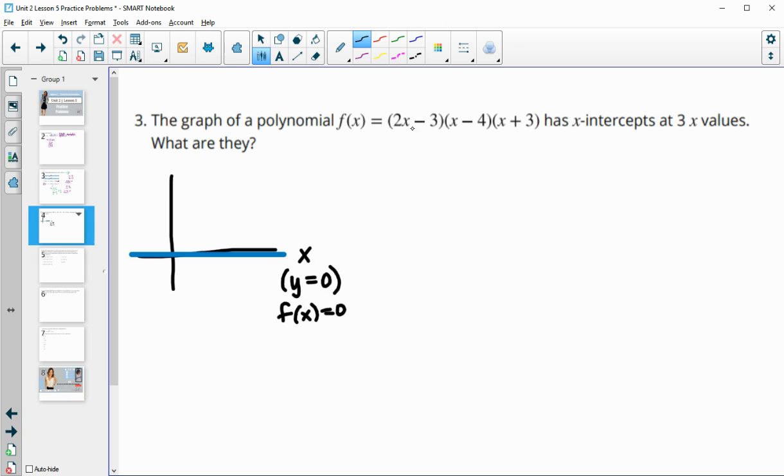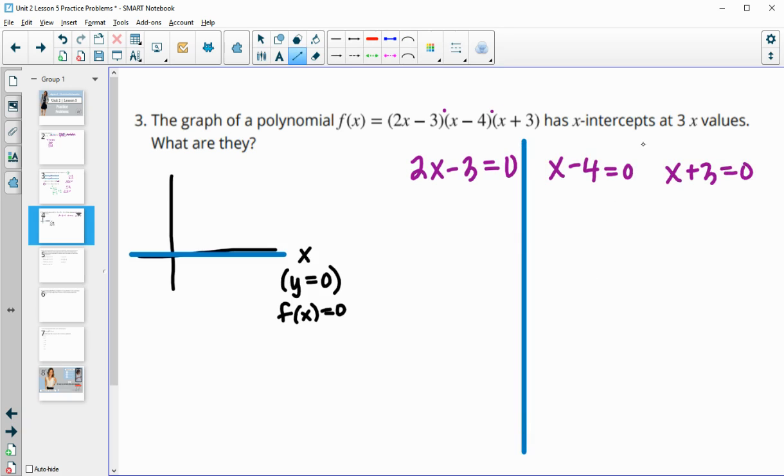So that means that we could set these. So when we multiply numbers together, if they equal 0, one of the factors is 0. So to figure out these x-intercepts, we just set each of these factors to 0 and solve. So let me just get some lines in between here to separate these.